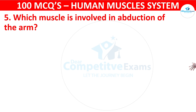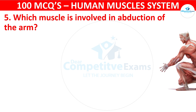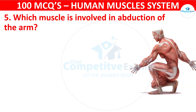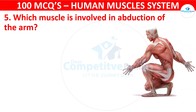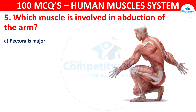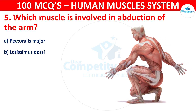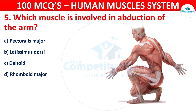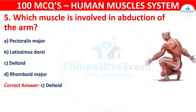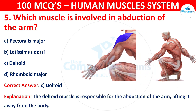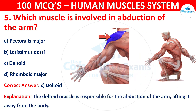Question number five: Which muscle is involved in abduction of the arm? Your options are: Pectoralis major, Latissimus dorsi, Deltoid, or Rhomboid major. The correct answer is C, that is deltoid. The deltoid muscle is responsible for the abduction of the arm, lifting it away from the body.